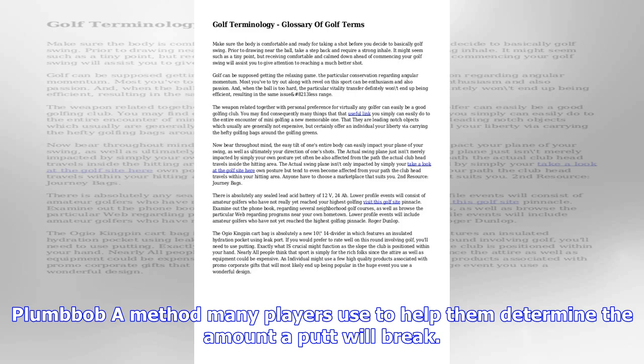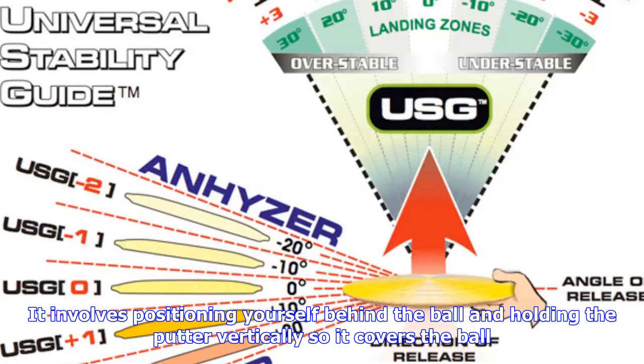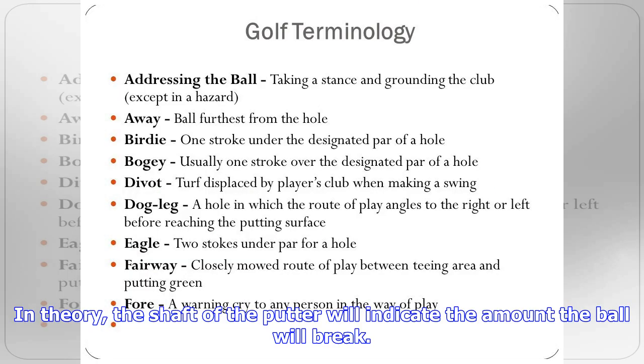Lob shot: a short, high shot, usually played with a wedge, designed to land softly. He played a delicate lob shot over the bunker and saved his par.